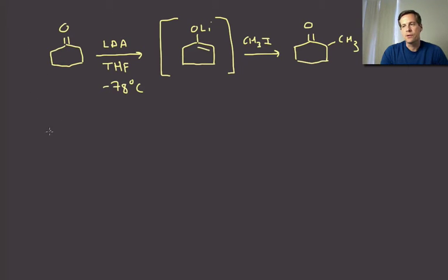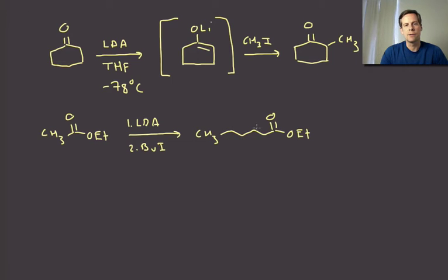This would be for ketones. The same thing would work for esters. For example, if I had ethyl acetate, not very acidic, so I'm going to need the LDA or something equally strong to deprotonate. LDA followed by, let's say, butyl iodide. And if I do this, I would get this product - one, two, three, four carbons, and there's my fifth carbon right there.